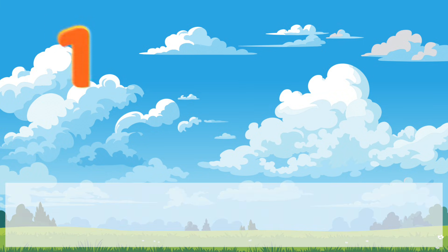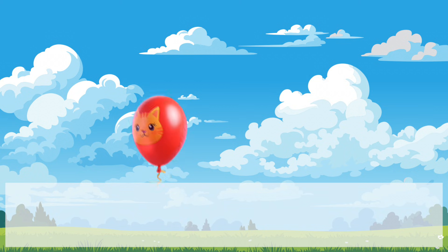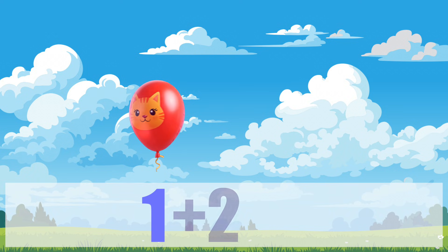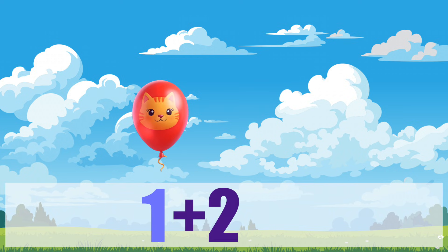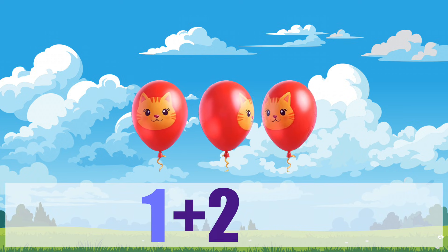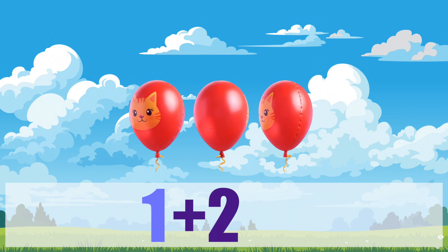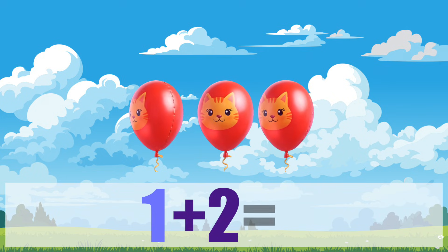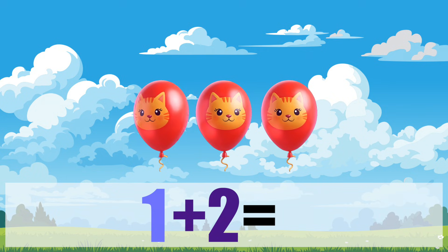Example number one. Here comes a balloon. One balloon floats up into the air. Now two more balloons drift up. So our addition sentence is one plus two. Let's count all the balloons together.